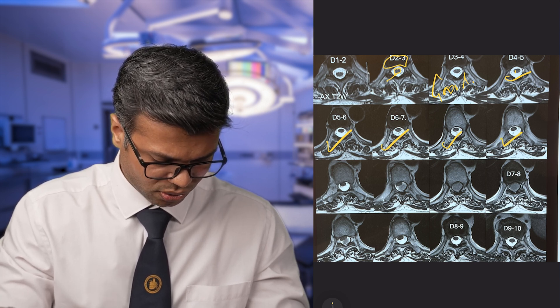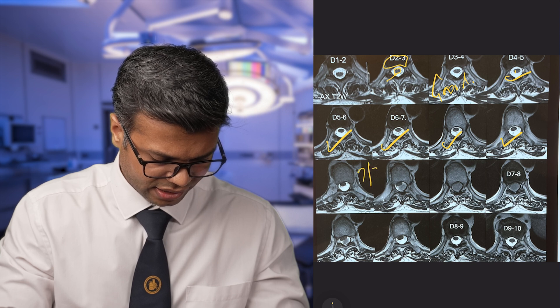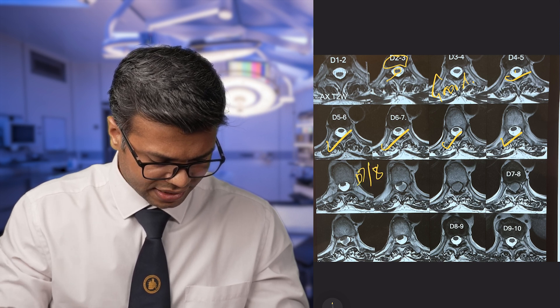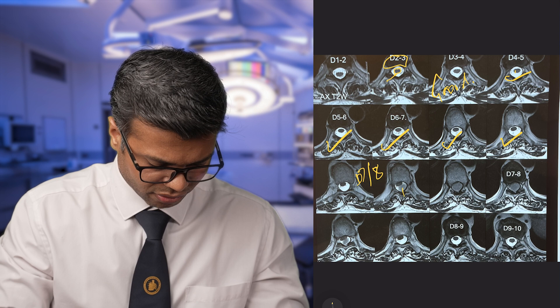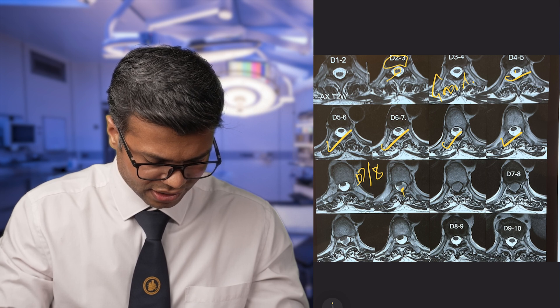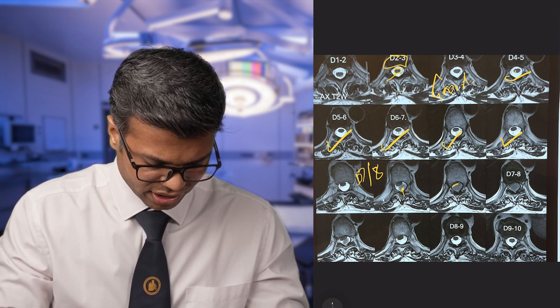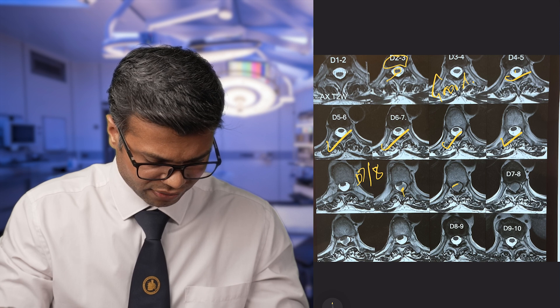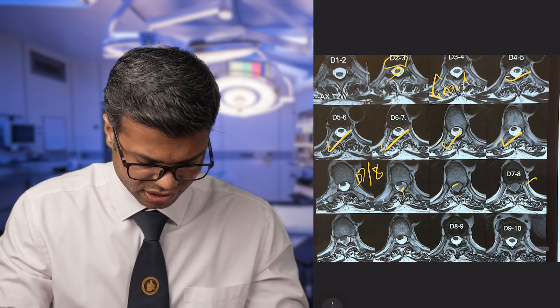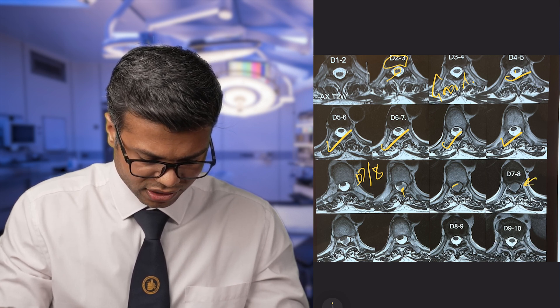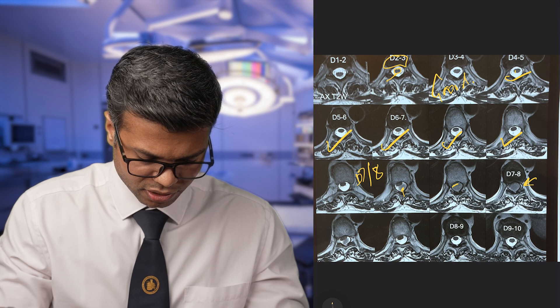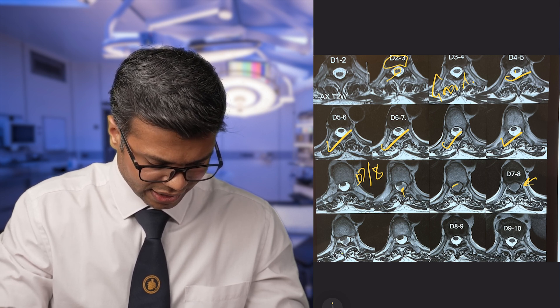As you start going down to the level of D7-D8, you can see there is a mass arising from the back inside the dura, completely pressing the spinal cord — it is hardly visible here. All of this space inside the dura is occupied by this mass, and then it gets better again as you go further down.